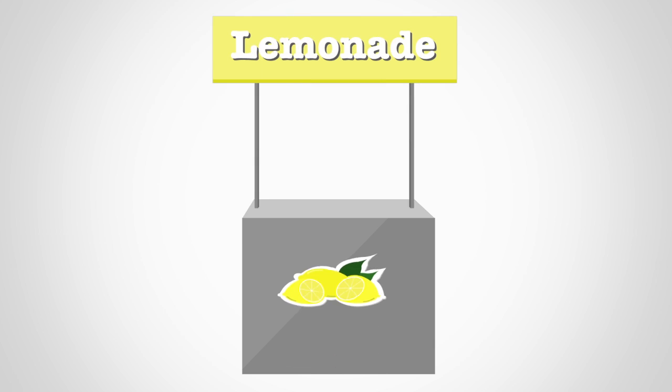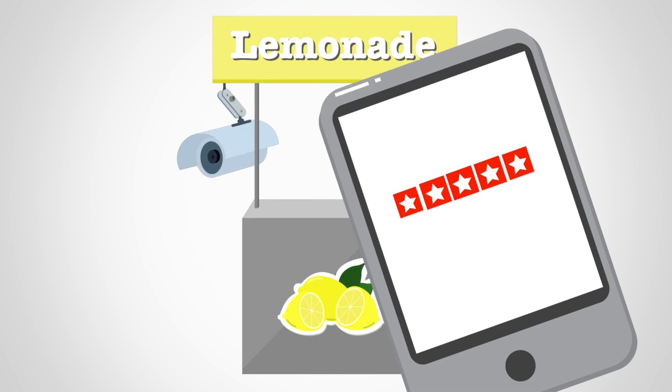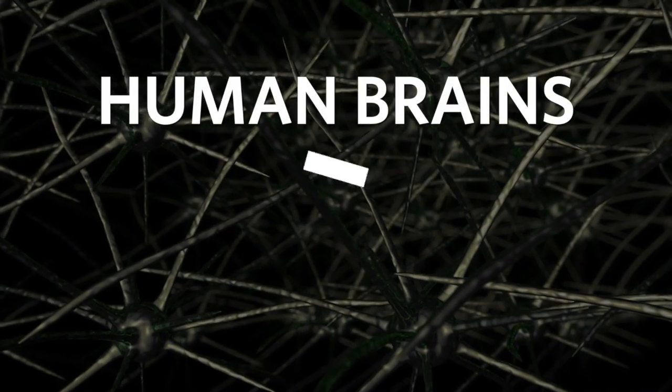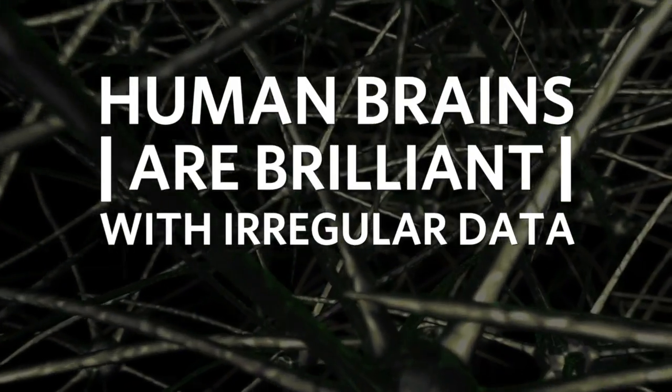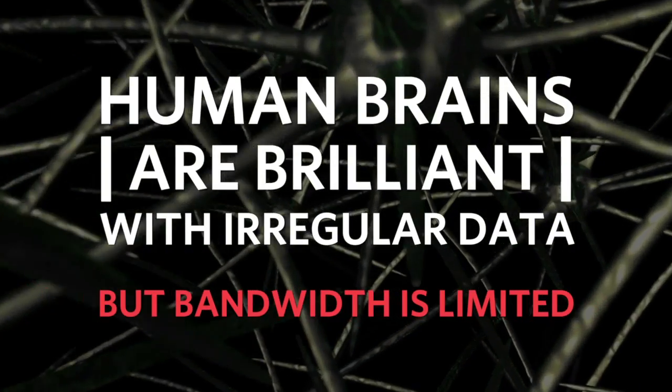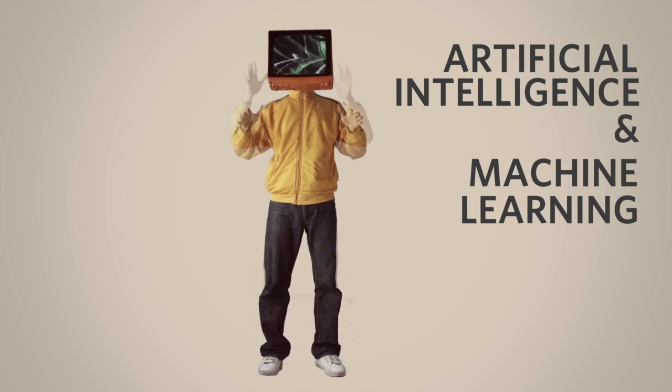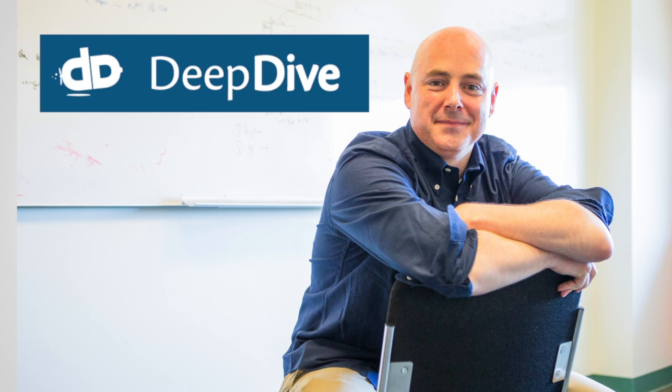Unstructured data might include video from surveillance cameras or customer reviews posted on Yelp or blog posts. Human brains are brilliant at processing irregular data, but our bandwidth is limited to what we can see or hear at any one time. Enter artificial intelligence and machine learning applications, like Christopher Wray's deep dive system.